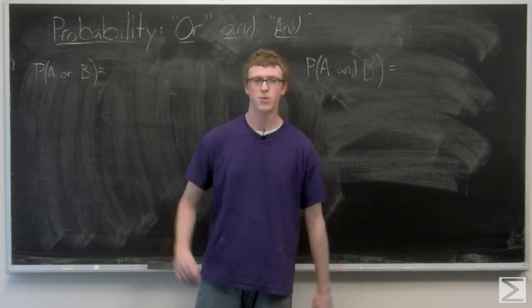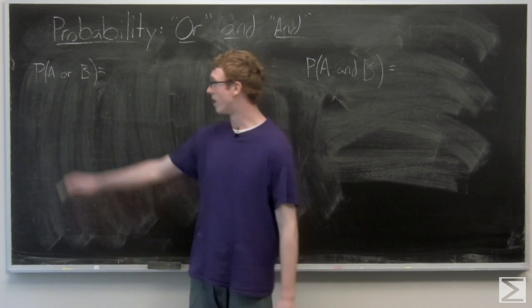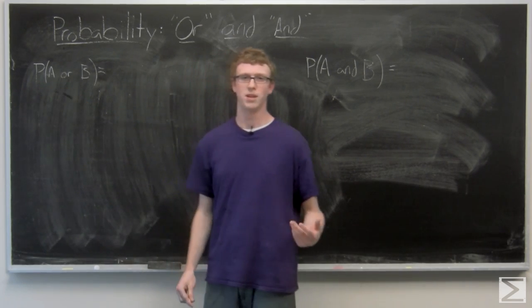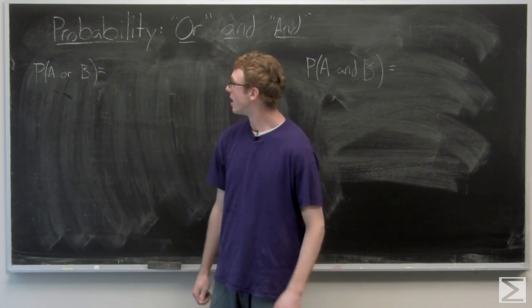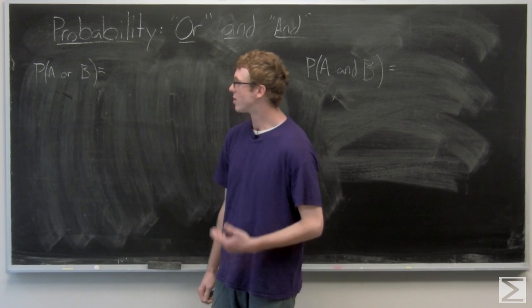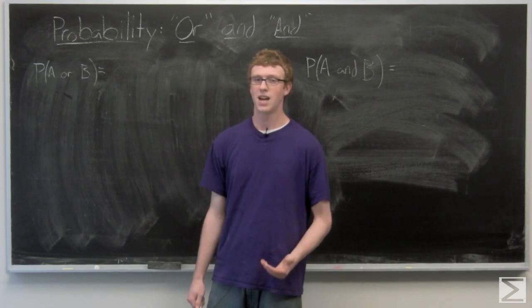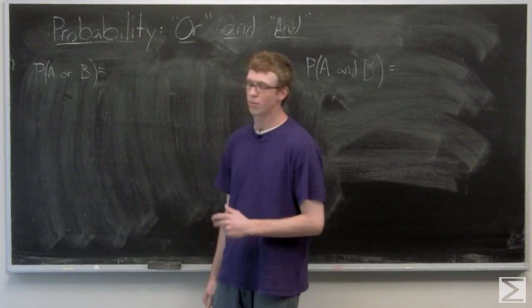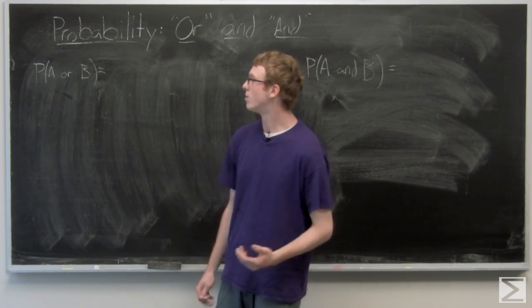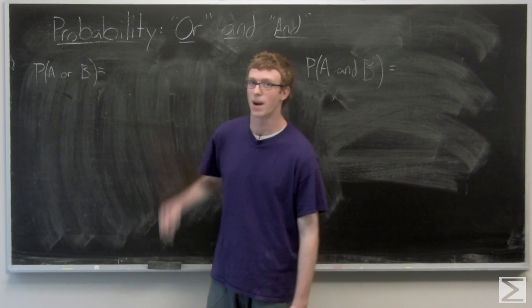The first that we're looking at is the probability that, say, A or B happens. This is pretty simple to figure out. It's the probability of A plus the probability of B minus the probability of both happening.